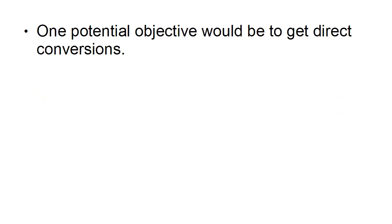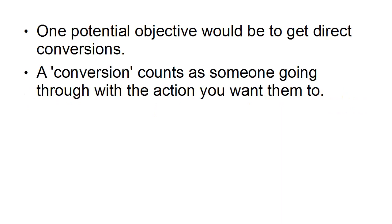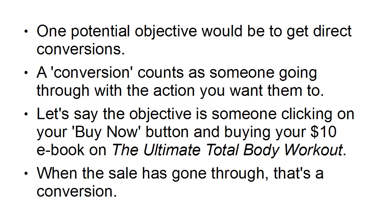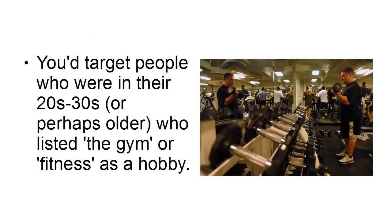One potential objective would be to get direct conversions. A conversion counts as someone going through the action that you want them to. For example, the objective could be someone clicking your buy now button and buying your $10 ebook on the ultimate total body workout. When the sale has gone through, that's a conversion — making a direct sale from your website via a Facebook ad. For this ad, you would target people in their 20s or 30s or older who listed the gym or fitness as a hobby in their Facebook profile.